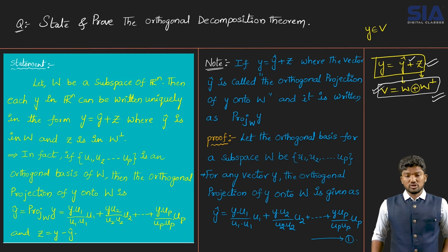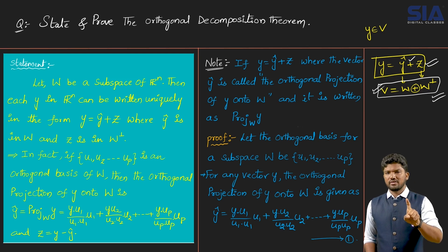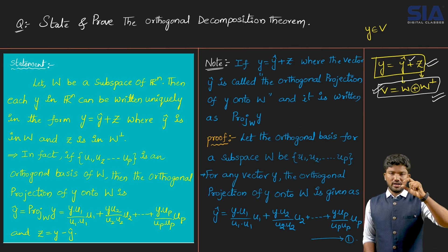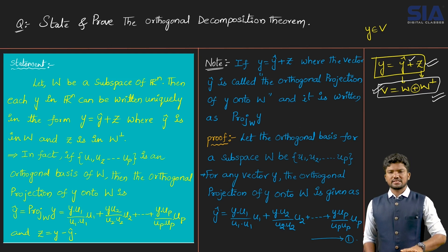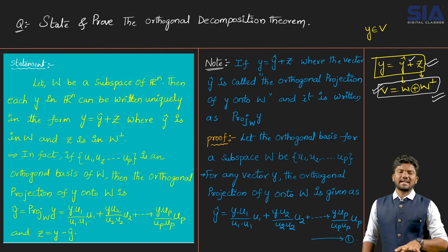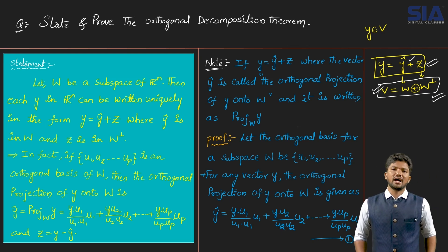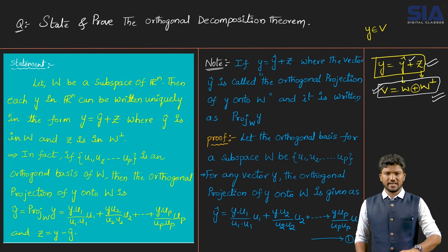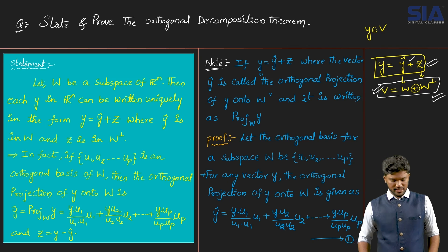In this Orthogonal Decomposition Theorem, we study about vectors: whenever you take a vector, there is one projection and one orthogonal complement component, and y equals y-hat plus z. This theorem has an extension that we will study in higher classes. For now, we confirm that this theorem has an extension which belongs to higher-level study.